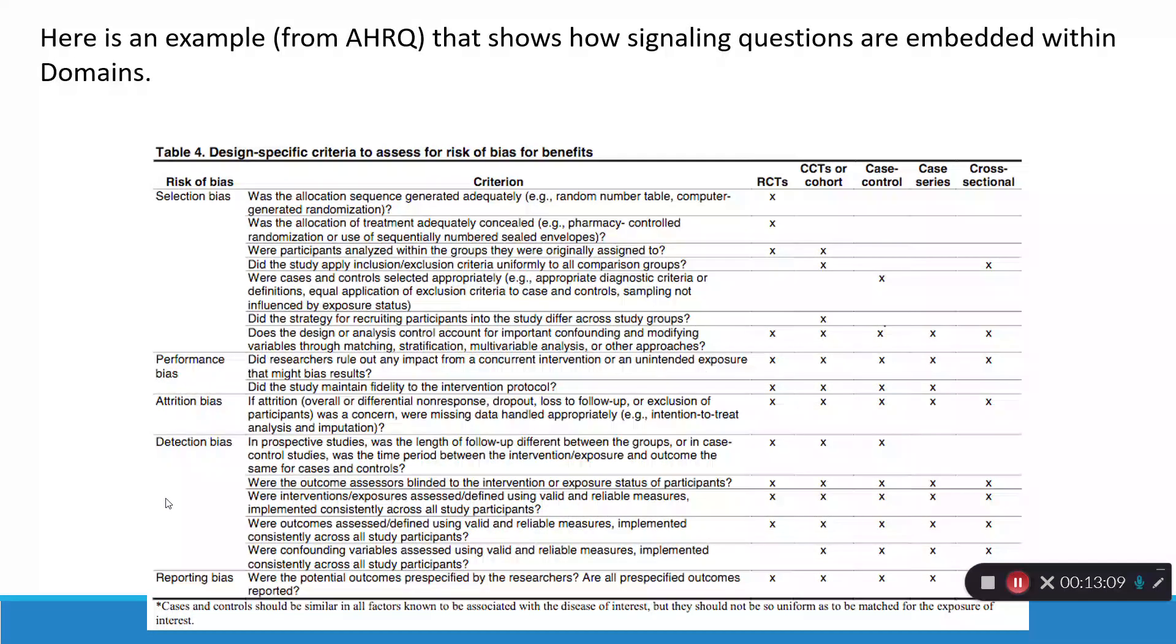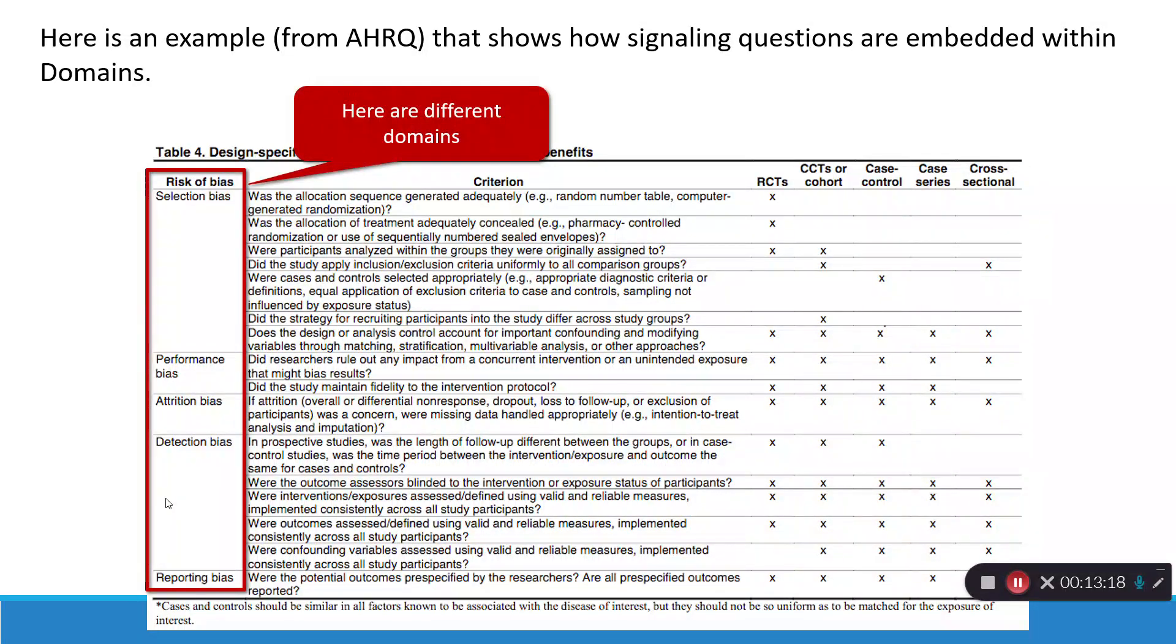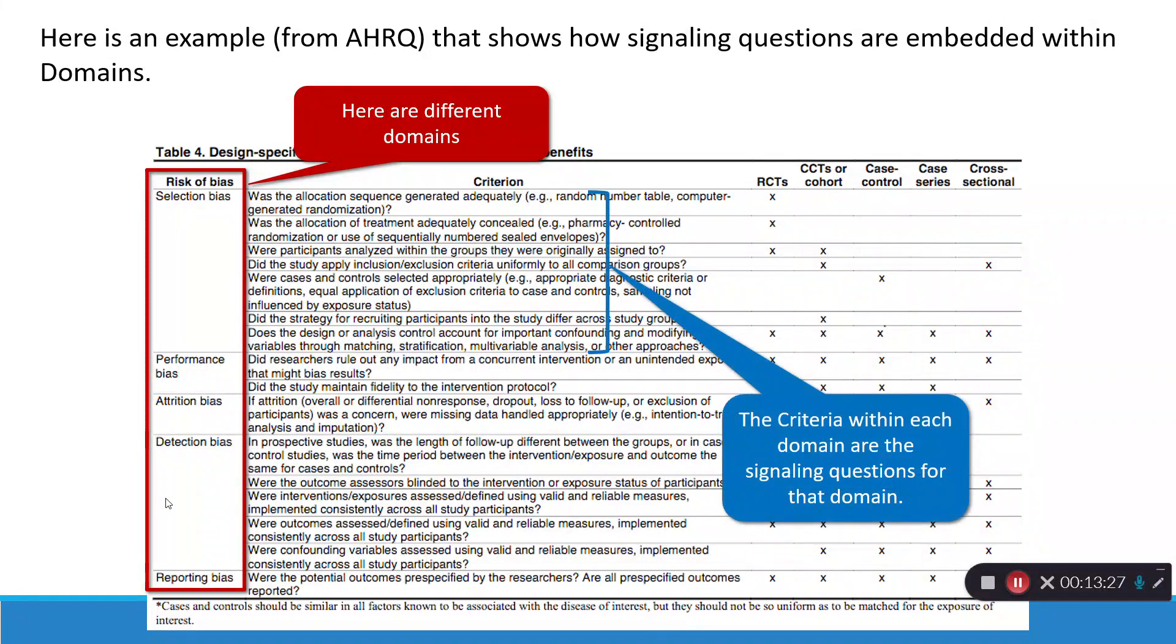Here's an example from the U.S. Agency for Healthcare Research and Quality that shows how signaling questions are embedded within domains. On the left-hand column, you see here are different domains. Selection bias, performance bias, attrition bias, etc. And then, there are criteria within each of the domains that are the signaling questions. These are the questions that are going to give you the basis for making a judgment about the overall bias within a domain.